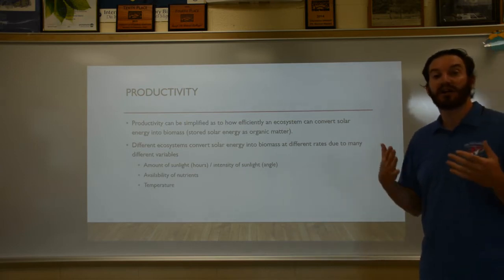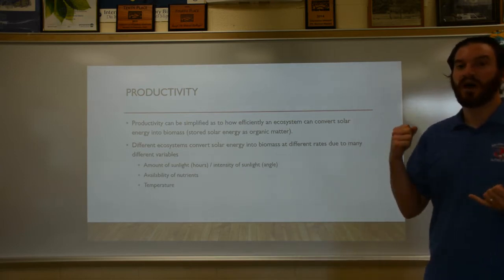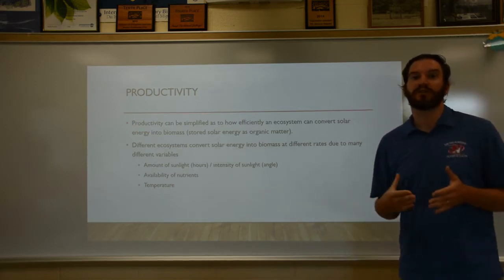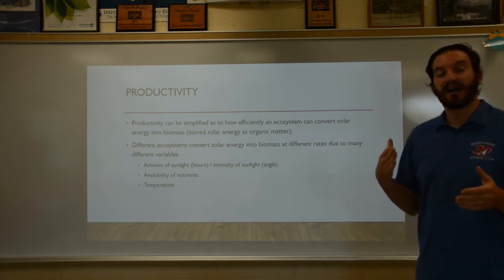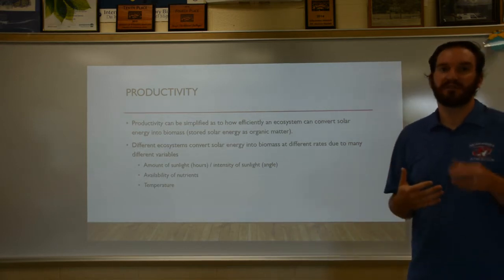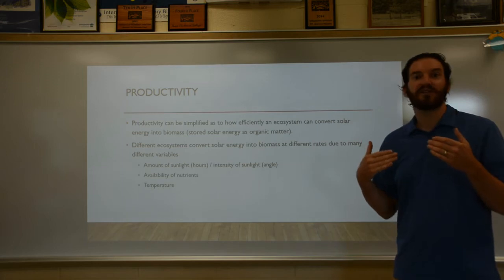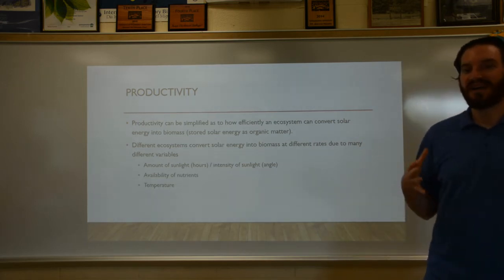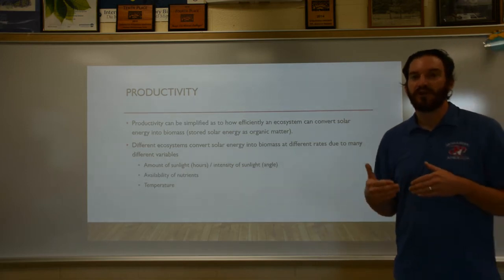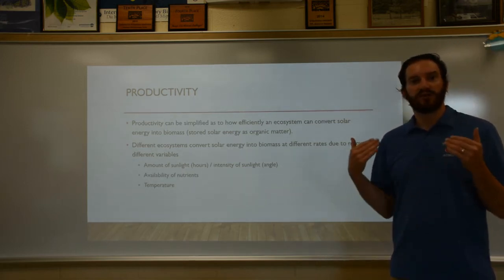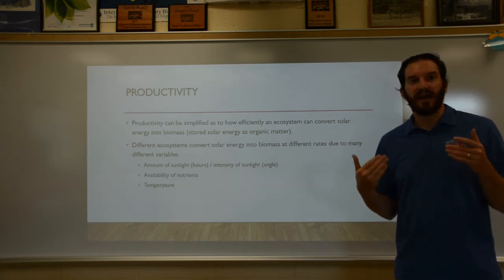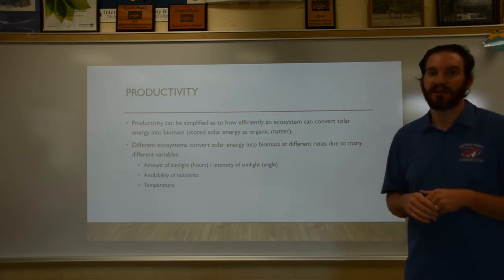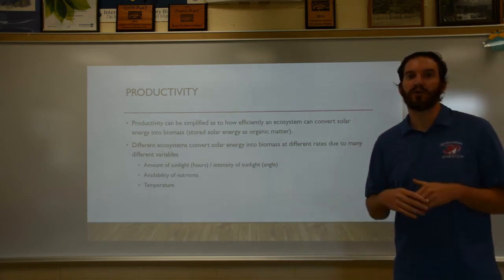Different ecosystems convert solar energy to biomass at different rates depending on a couple of major factors. One is the amount of sunlight — more sunlight means more photosynthesis can take place. Not only the amount, but also the intensity of sunlight. Areas like the Arctic Circle get six months of sunlight, but not the intensity that the tropics get. Tropical regions receive more direct, intense light and are therefore able to photosynthesize at a much faster rate than polar ecosystems.